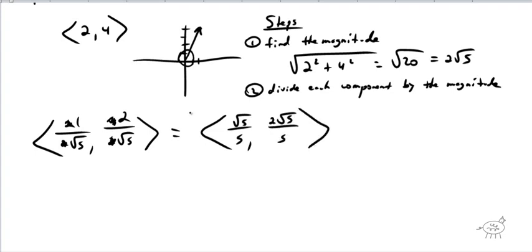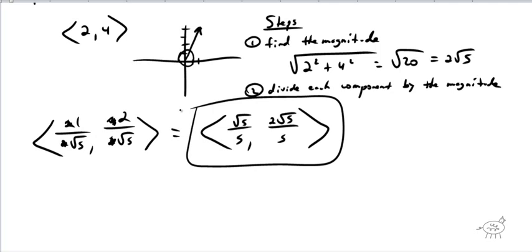And there we go — that's the answer, math fans. That is a unit vector. It's pointing the exact same direction as ⟨2, 4⟩, but its magnitude is only 1.